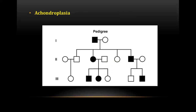The next question was about a pedigree related to achondroplasia. Achondroplasia is an inherited autosomal dominant trait, which means if a child gets the defective gene from one parent, the child will have the disorder. If one parent has achondroplasia, there is a chance of inheriting the disorder.